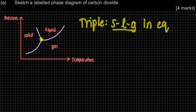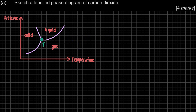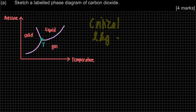For your phase diagram, you also have to label the triple point and critical point. Triple point is where solid, liquid, and gas are in equilibrium — the point where these three meet. You could write T or the full name, triple point. The critical point is the point beyond which liquid and gas are no longer distinguishable — you cannot tell whether it is liquid or gas. This is our critical point.